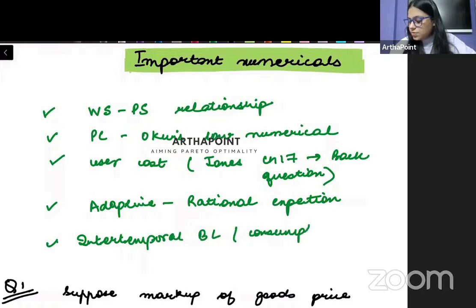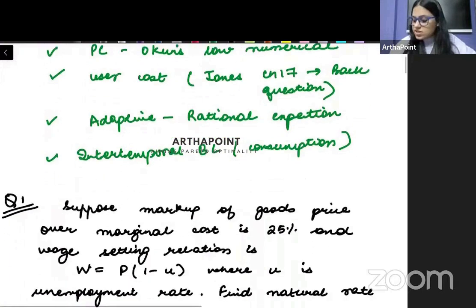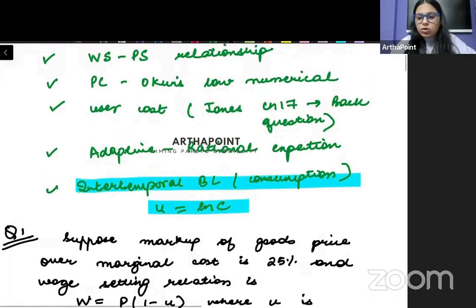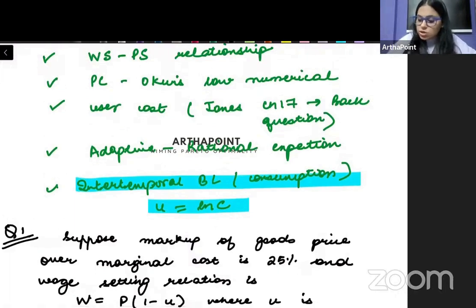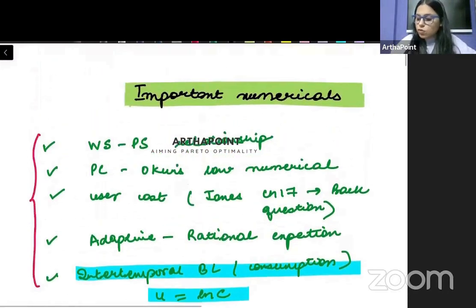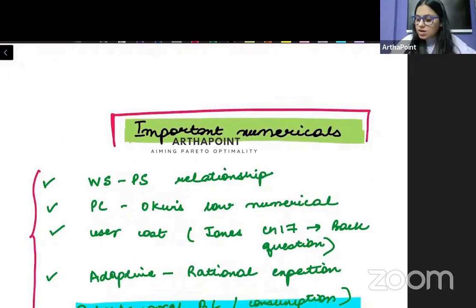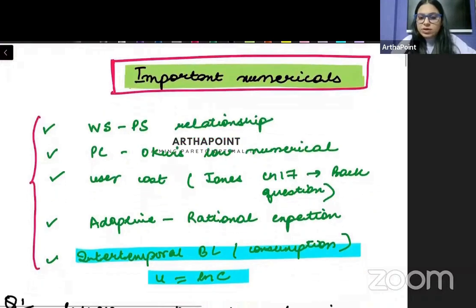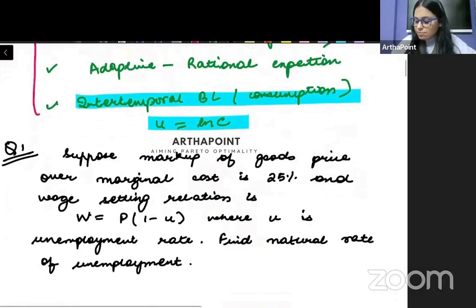They can give you a utility function, like a utility function ln C, and they will ask you to go ahead and calculate your budget line or to calculate the equilibrium levels of consumption. So all these five topics are very important from the point of view of numericals that can be asked in tomorrow's paper. And I hope that all of you just prepare those numericals well. Now quickly, I don't want to waste your time today, so quickly I will just show you an example of each of this.